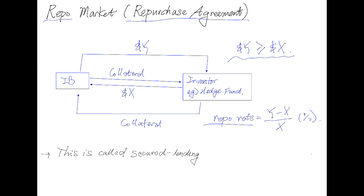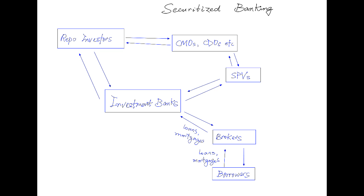What we've seen here is called a secured lending system, and as you can see, the type of collateral is very important. With this in mind, let's see how investment banks operate. Investment banks are not like traditional banks in that they don't hold deposits — they instead raise funding in the repo market, as seen here.